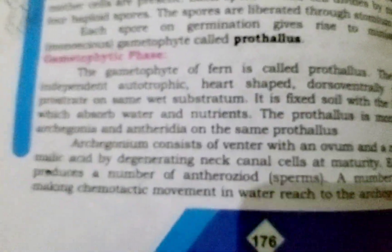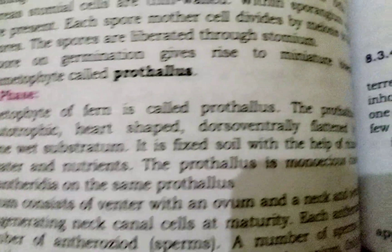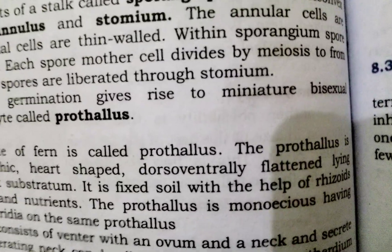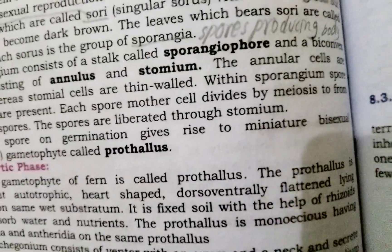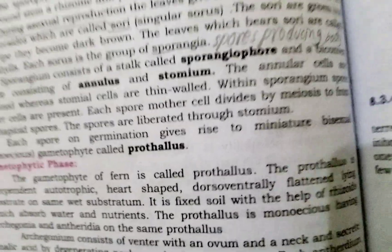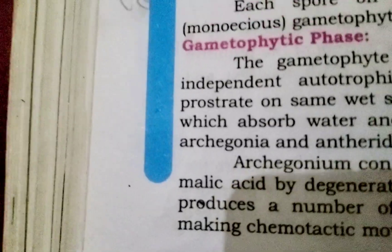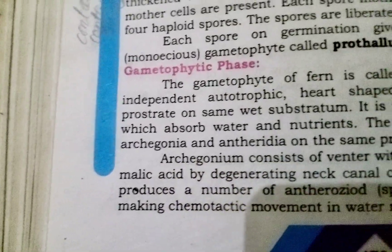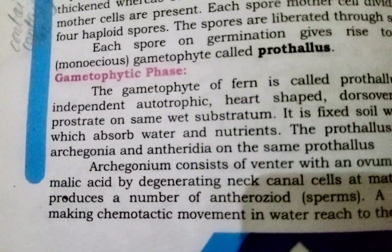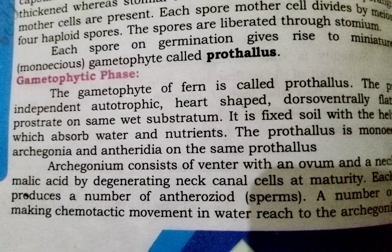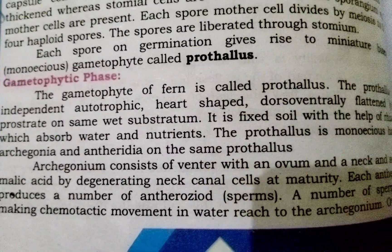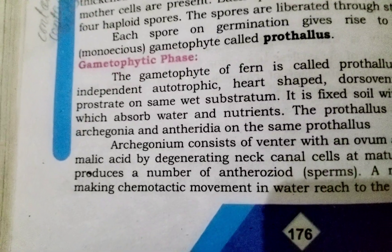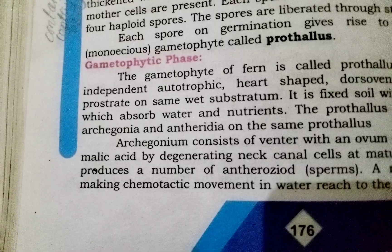Gametophyte phase: The gametophyte of fern is called the prothallus. The prothallus is independent, autotrophic, heart-shaped, dorso-ventrally flat, and lying prostrate on moist substratum. It is fixed to the soil with the help of rhizoids which absorb water and nutrients.